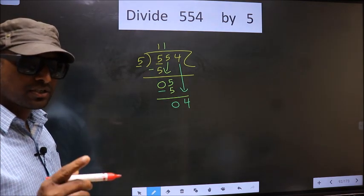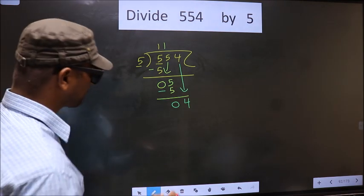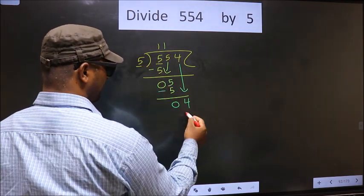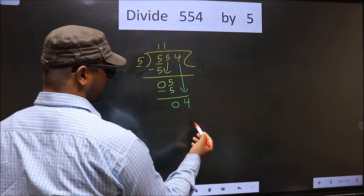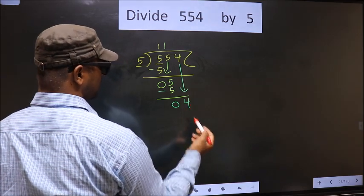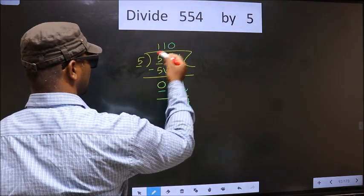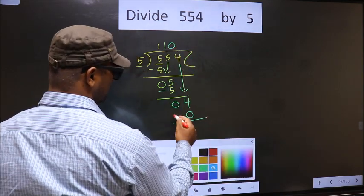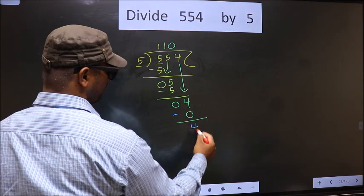Instead, what you should think of is, what number should we write here? If we write 5 here, that is larger than 4. So what we do is take 0 here. 5 times 0 is 0. Now subtract: 4 minus 0 equals 4.